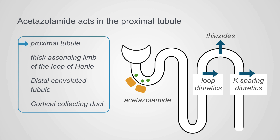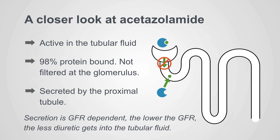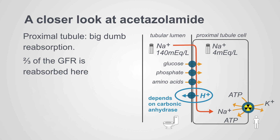Acetazolamide acts at the proximal tubule and, like other diuretics, is active in the tubular fluid, so it needs to be filtered or secreted into the proximal tubule to be effective. 98% of acetazolamide is protein-bound, so it cannot be filtered into the glomerulus, meaning it must be secreted by the proximal tubule to be active. Secretion is GFR-dependent, so the lower the GFR, the higher the dose you need to have an active effect.